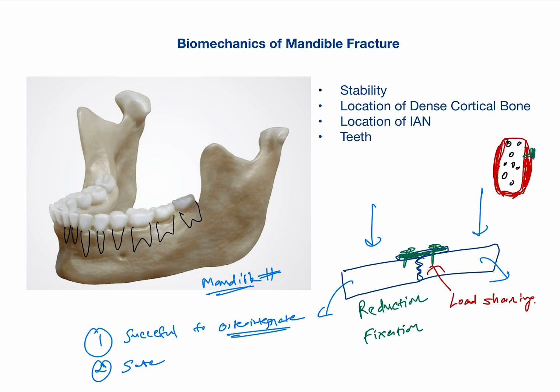We want to know which areas allow successful osteointegration, so we need thick cortical bone. First, from canine to canine — the anterior region — the bone is thick cortical bone on the buccal aspect, both on the superior part and the inferior border. Another area with thick cortical bone is the external oblique ridge, where screws can be placed successfully without any chances of loss of osteointegration.